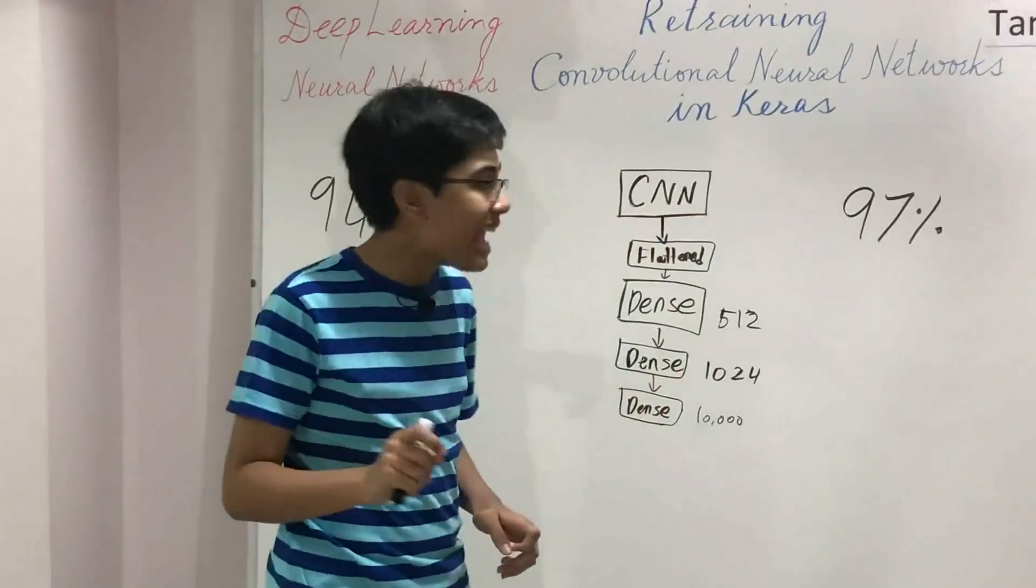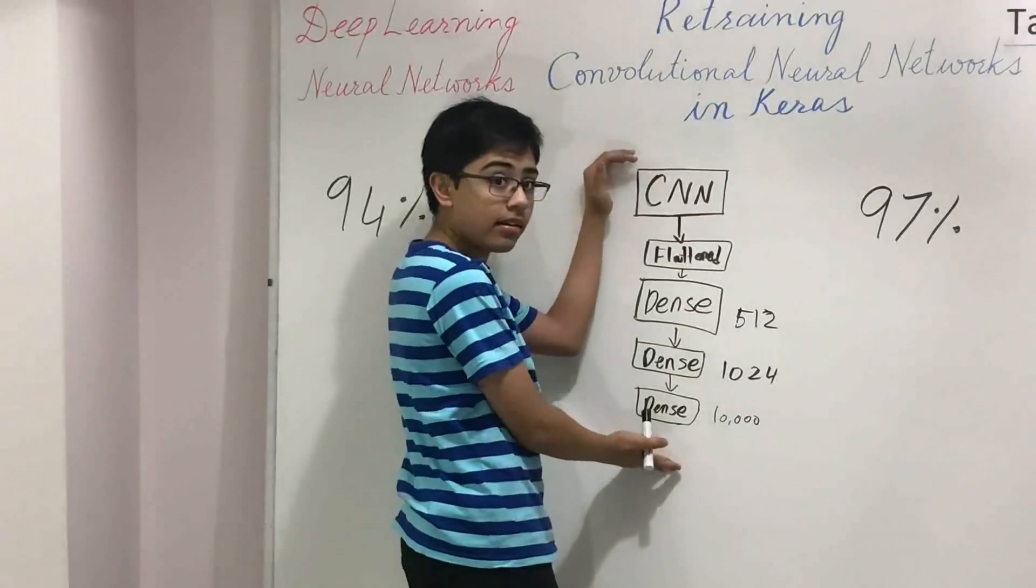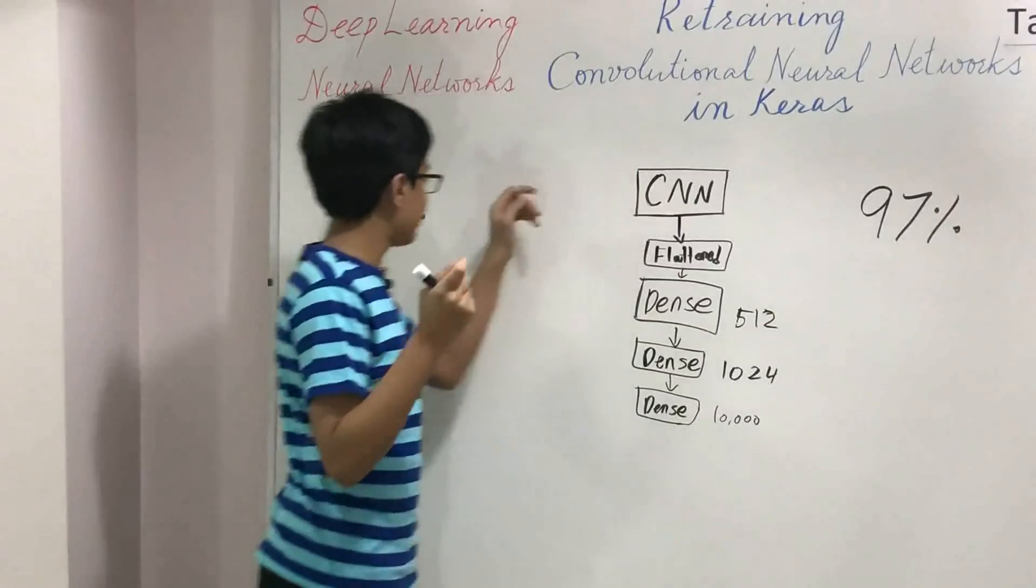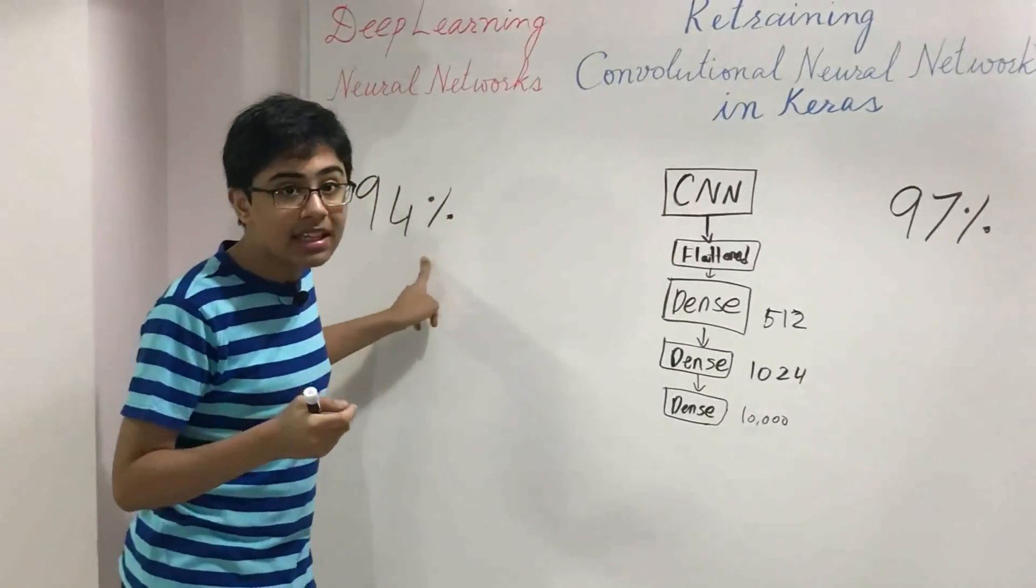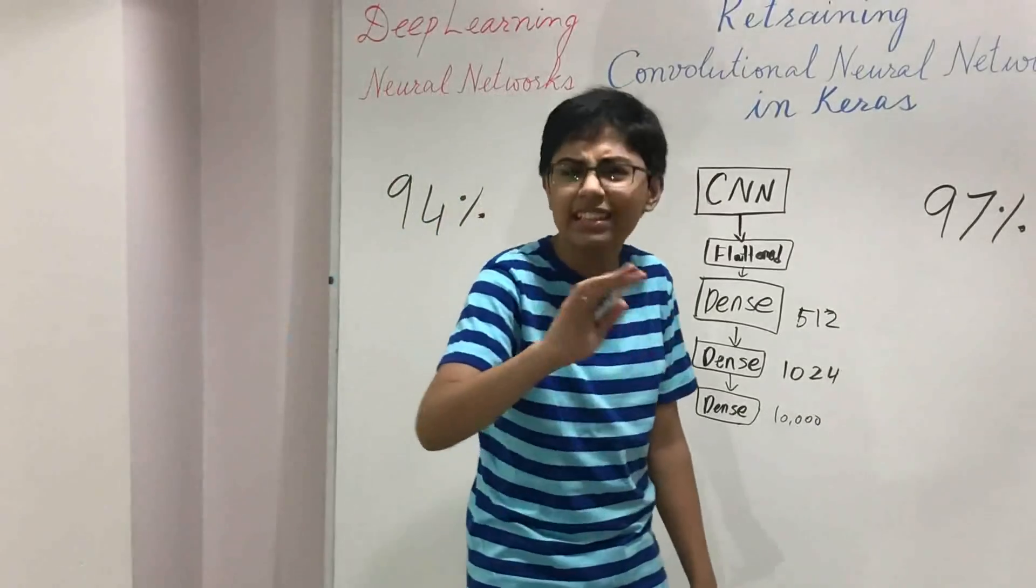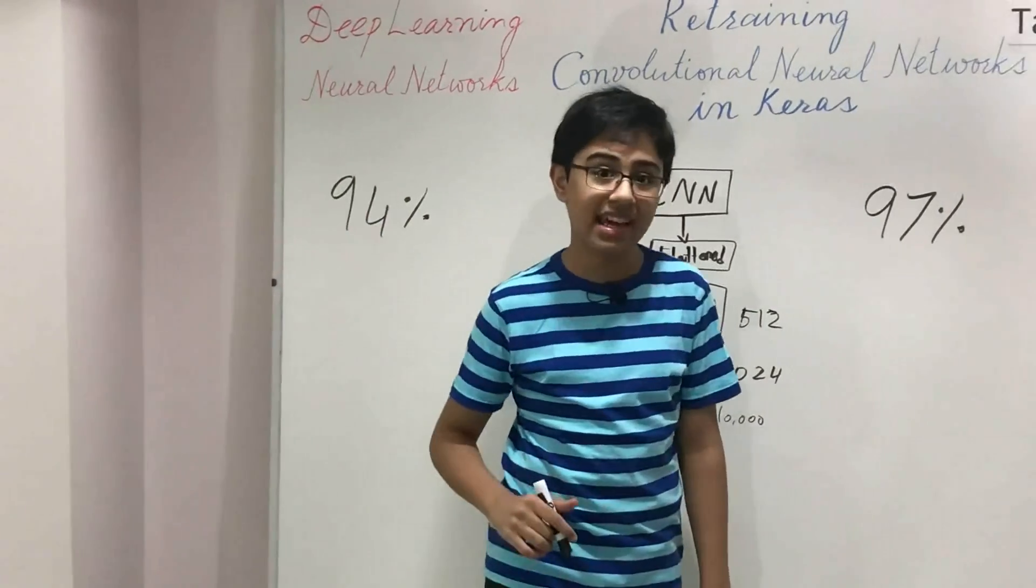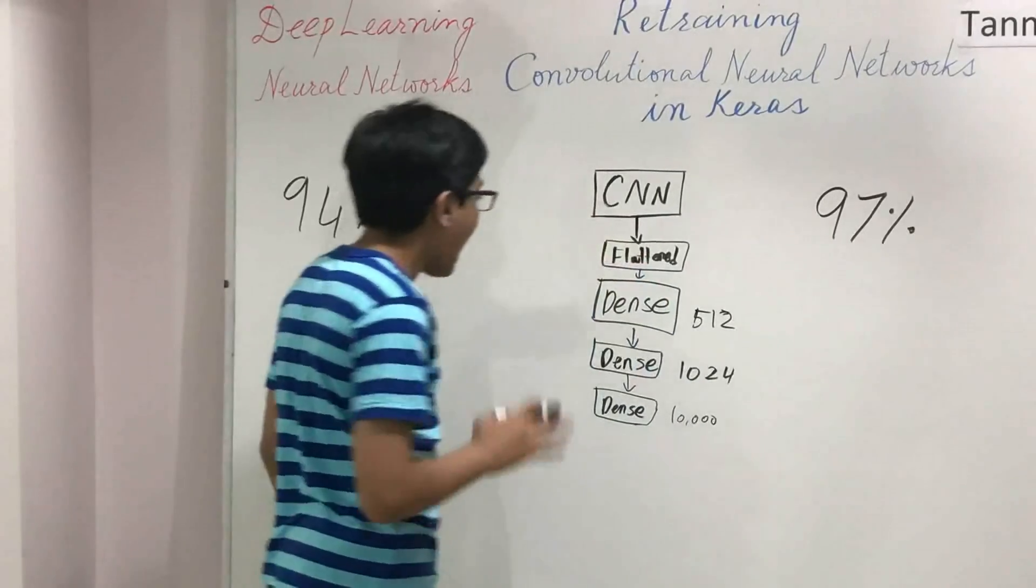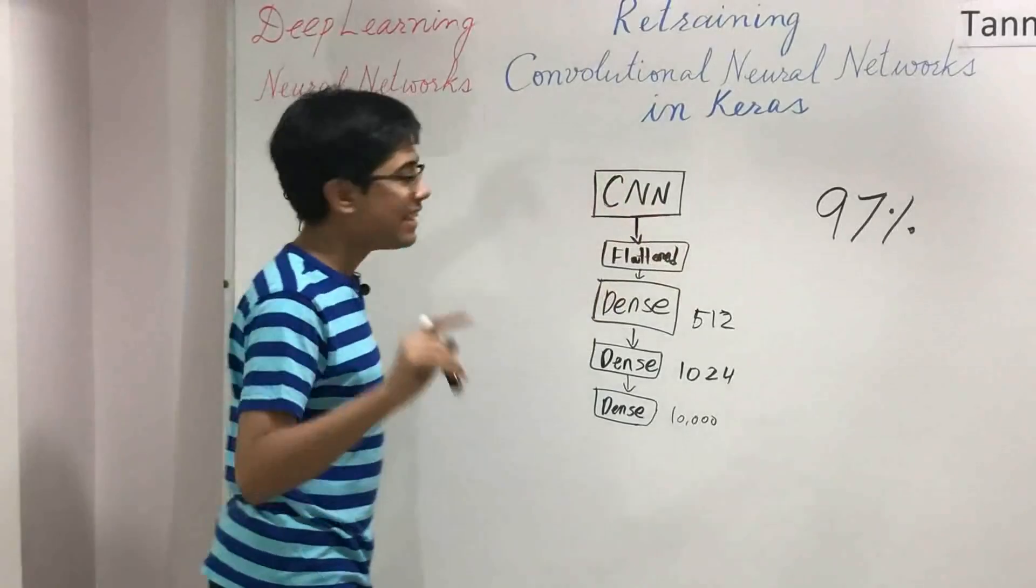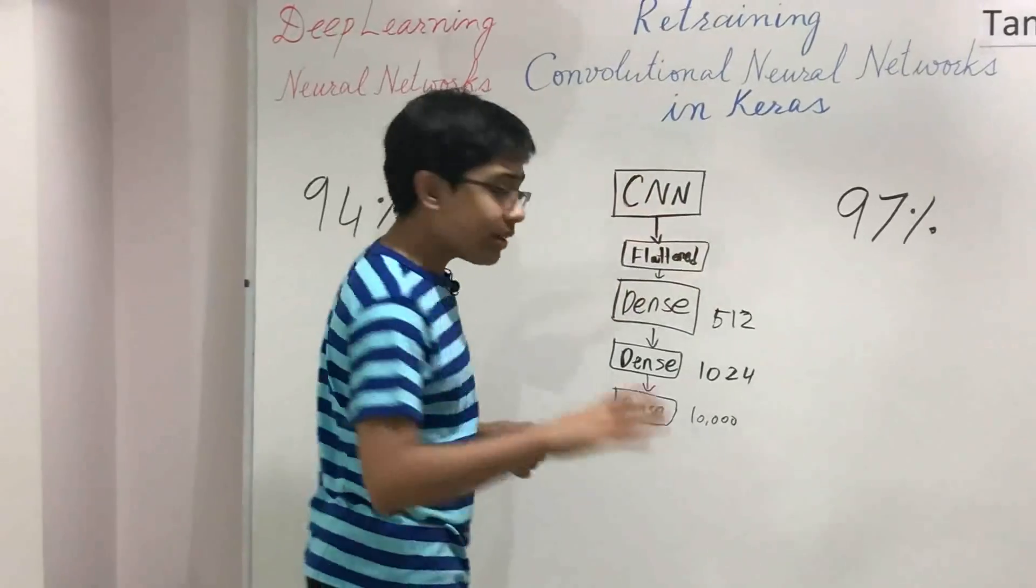However, if you take some of the knowledge from this CNN and apply it to a relatively simpler task, like the cats and dogs, you can get high accuracy. If anything, 98, maybe 99% accuracy on such a data set. And so, how do you achieve this? This sounds like magic, doesn't it? How do you achieve it? Well, take a look at this.